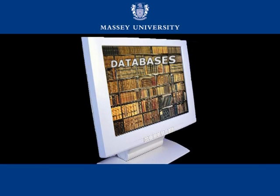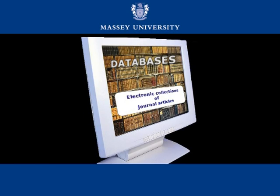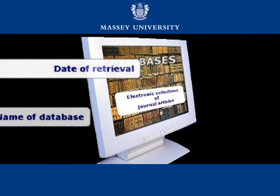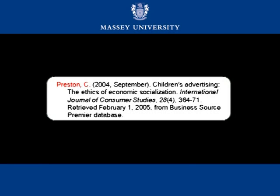You will find that most of the journal articles you access for your assignments will be found in the university databases. These databases are electronic collections of journal articles. So when you want to list a journal article from a database in your reference list, follow the same format appropriate to journal articles in a hard copy and add the date of retrieval and the name of the database. Here we have a journal article written by C. Preston in 2004. It appeared in the International Journal of Consumer Studies in the fourth issue of volume 28, originally published on pages 364 to 371 of that hard copy journal. You can also see quite clearly when the article was retrieved and the name of the database it was retrieved from.